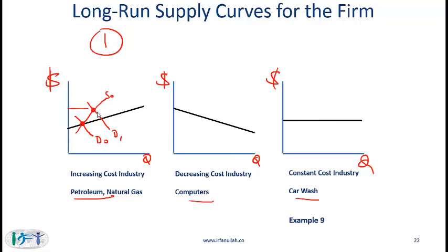Let's look at the increasing cost industry in detail. Initially we have a demand curve D0 and a short run supply curve S0. When demand increases from D0 to D1, we move from equilibrium point E1 to E2, where prices are higher. Economic profits attract other firms, supply shifts right, and we eventually end up at E3. Since this is an increasing cost industry, overall prices increase. A similar analysis applies to decreasing cost industries, where prices keep falling, and in a constant cost industry, prices stay the same as more competitors enter.